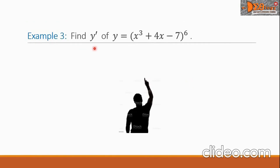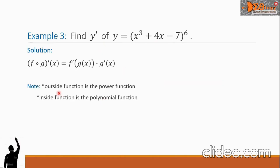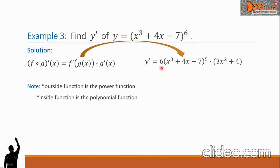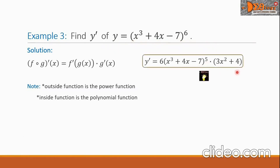Example 3: Find y prime of y equals the quantity x cubed plus 4x minus 7 all raised to power 6. The outside function is the power function — dot power 6 — and the inside function is the trinomial polynomial. For the derivative, we have 6 times the quantity x cubed plus 4x minus 7 raised to 5, times the derivative of the polynomial, which is 3x squared plus 4. This is our final answer.